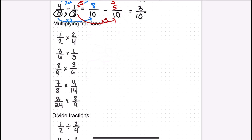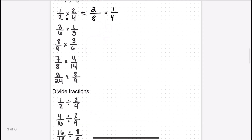Next, let's multiply fractions. The great thing about multiplying fractions is you do not need a common denominator — you can just multiply straight across. One times two is two, and two times four is eight, giving two eighths which reduces to one over four. In the next example — note there is a typo on screen — three times one is three and six times three is eighteen, which should reduce to one over six, not one over nine.